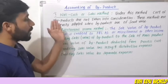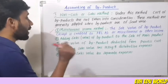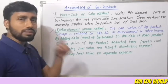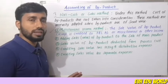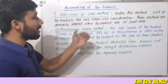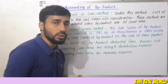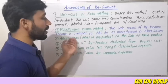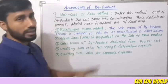Under this method, the sales value of byproducts is deducted from the process cost. From the process cost, we deduct the sales value of the byproduct. The next variant is crediting the sales value less selling and distribution expenses — we credit the sales value on the credit side.